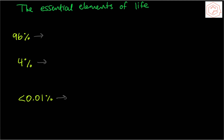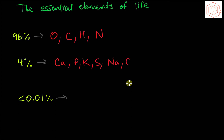96% of living matter consists of elements like oxygen, carbon, hydrogen, and nitrogen. The other 4% consists of elements like calcium, phosphorus, potassium, sulfur, sodium, chlorine, and magnesium. The elements that are present in less than 0.01% and are required for life are called trace elements.